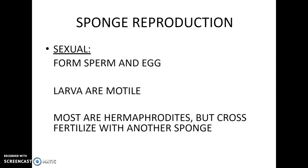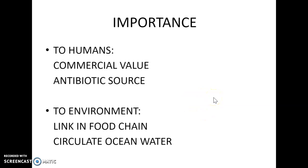Sponges can also reproduce sexually. They form sperm and egg that join together to make larvae that are motile. Most of them are hermaphrodites, but they cross-fertilize with another sponge — they don't fertilize themselves, as that really wouldn't have a point. Finally, reasons that sponges are important to us or to our environment: pick three of these to write down on your organizer. Thank you.